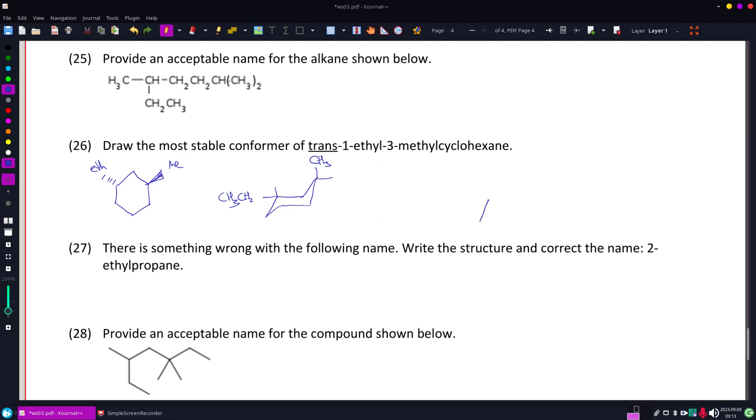Now, my other chair conformer is going to have those reversed, which would be the ethyl up and the methyl down.